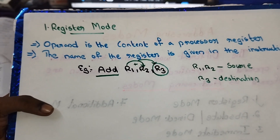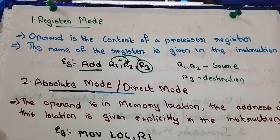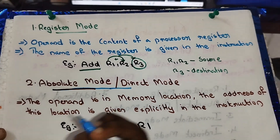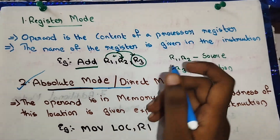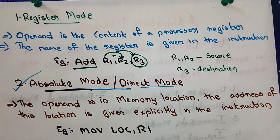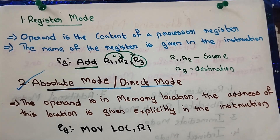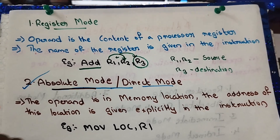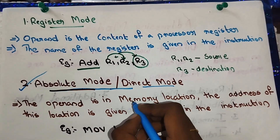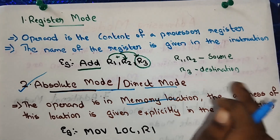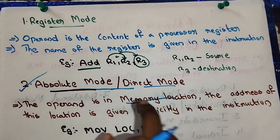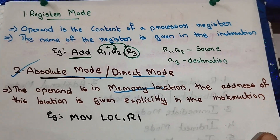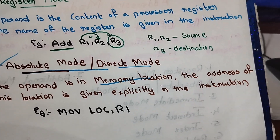Now let's go to the next addressing mode: absolute addressing mode, also called direct mode. In direct mode, the operand is in a memory location. The address of this location is given explicitly in the instruction.